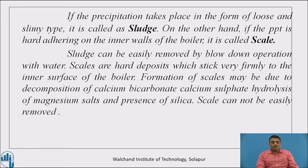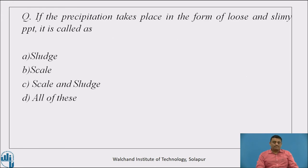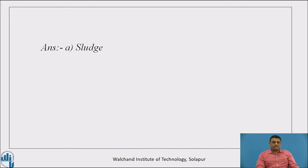Sludge can be easily removed by washing the coil with water. Quiz question: if the precipitation is in the form of a loose and slimy type of precipitate, it is called — sludge. The correct answer is sludge: if the precipitation is loose, it is called sludge.